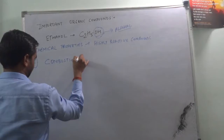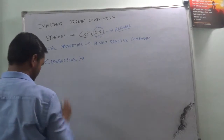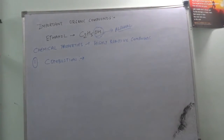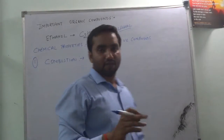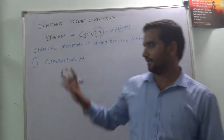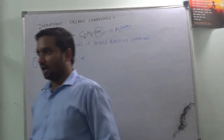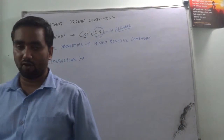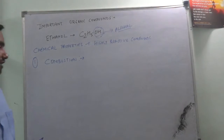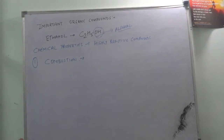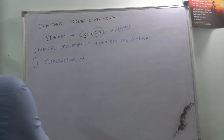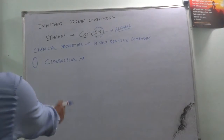If we react ethanol with air, what will be produced? We will take combustion as the first property, and this shows how ethanol will react with air and what the products will be. Ethanol is a highly volatile and combustible liquid.